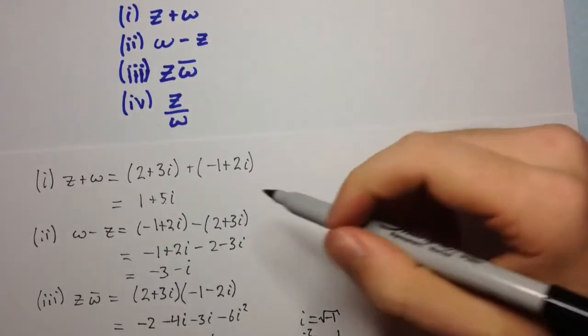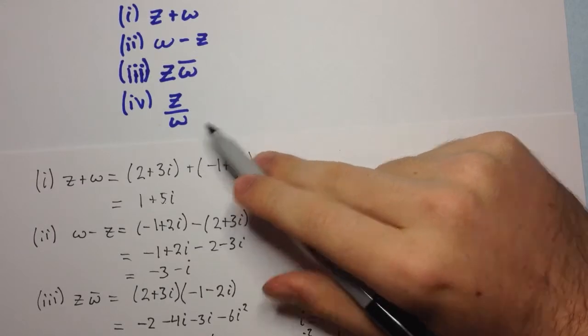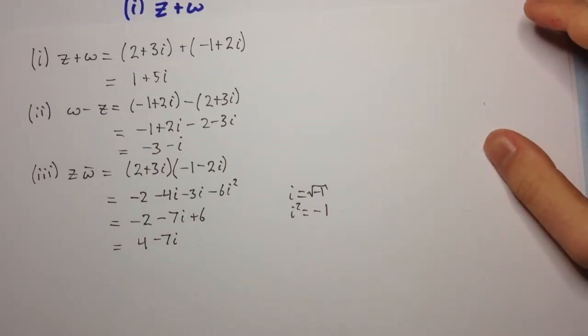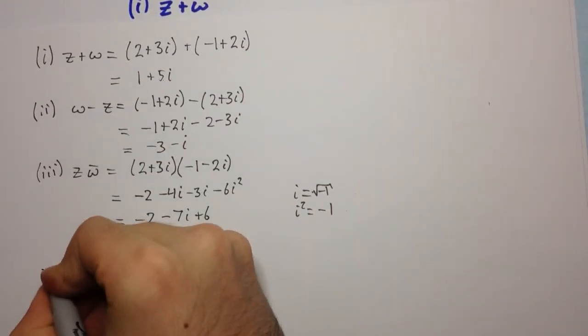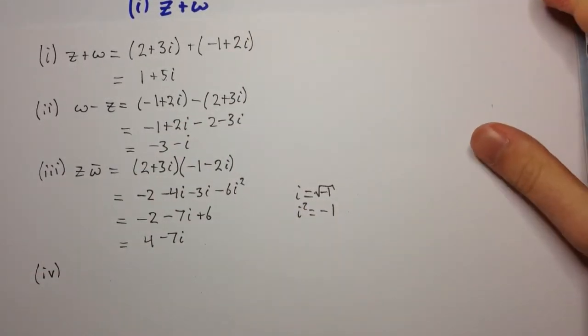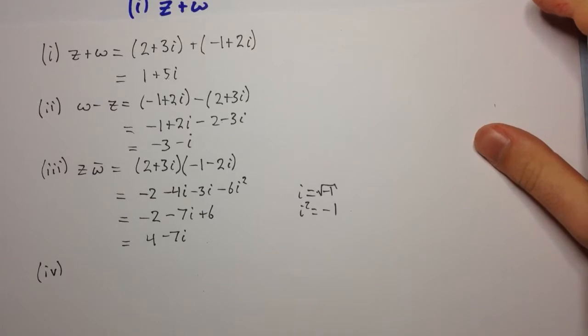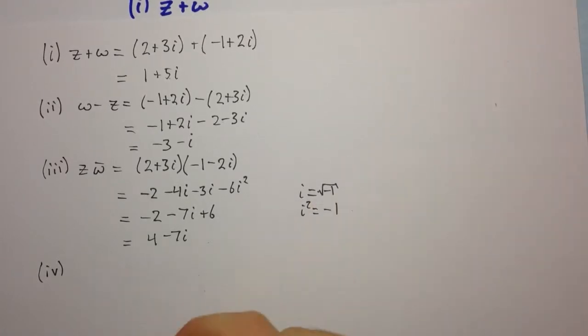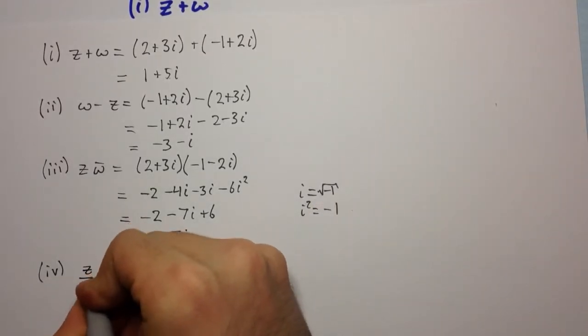The last part is z divided by omega. So far all of these have been fairly straightforward. You probably would be able to do them without very much knowledge of complex numbers at all. But here we need to look at something different.